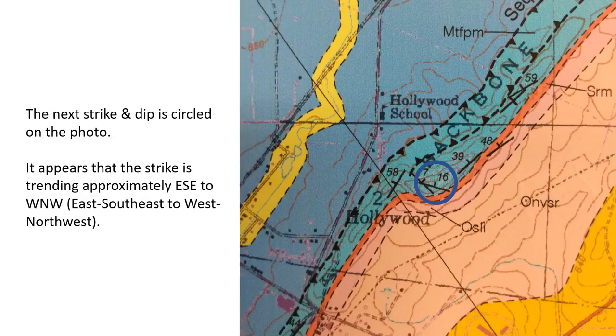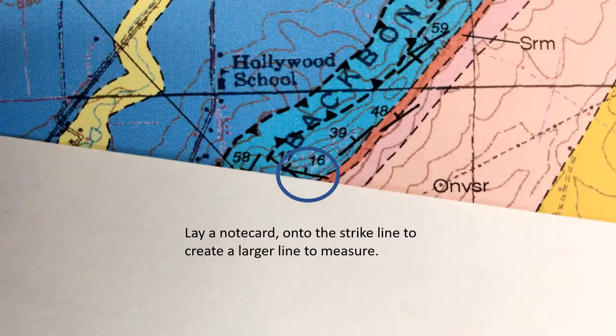The next strike and dip we will measure is circled on the photo. This strike appears to be trending east-southeast to west-northwest. Just like for the previous location, we are going to lay a note card or piece of paper along the strike symbol. This creates a larger line to measure, which is very helpful when the symbols are small and difficult to read.